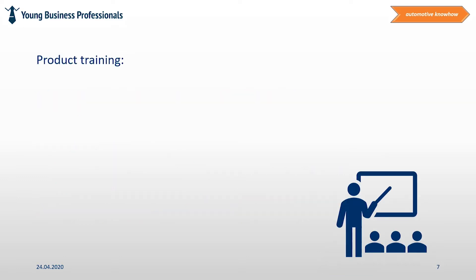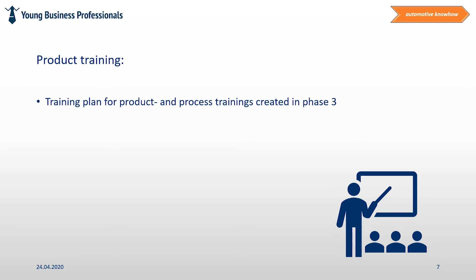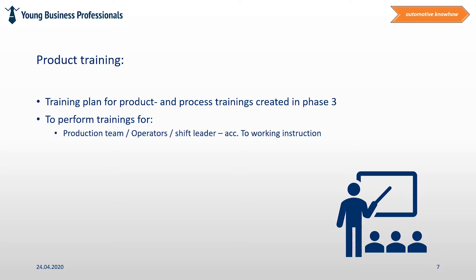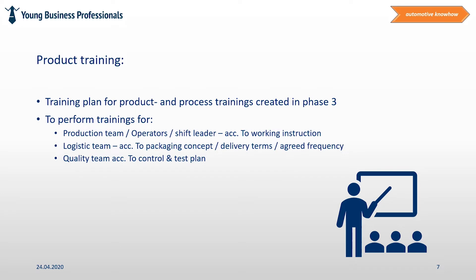Product trainings are performed according to the training plan. In Phase 3 of the project, a training plan for product and process trainings was defined. Trainings for the production team — such as operators or shift leaders — according to created work instructions should be completed. The logistics team should be trained according to the packaging instructions and further specifications. The quality team needs to be instructed according to the control plan and test plan, and introductions to new test equipment must be given. Furthermore, it's important that all team members in contact with the product understand its main functions, the drawing, and the special characteristics of the product.